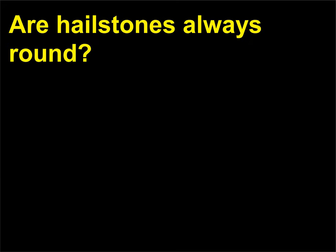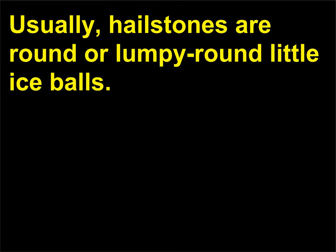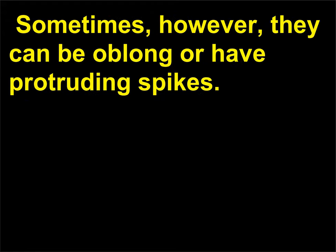Are hailstones always round? Usually, hailstones are round or lumpy round little ice balls. Sometimes, however, they can be oblong or have protruding spikes.